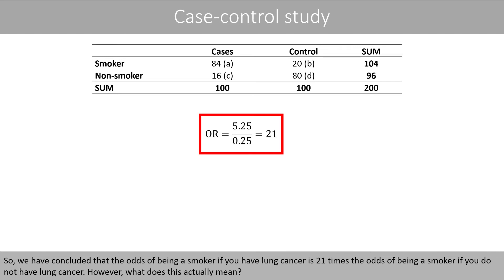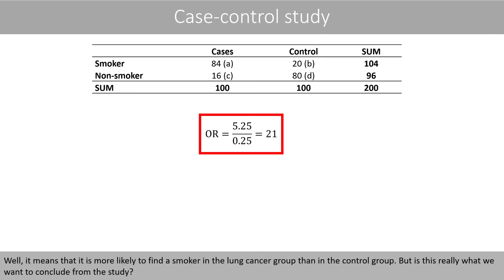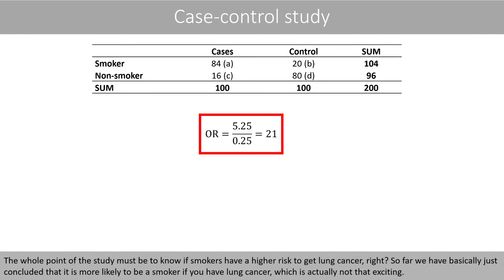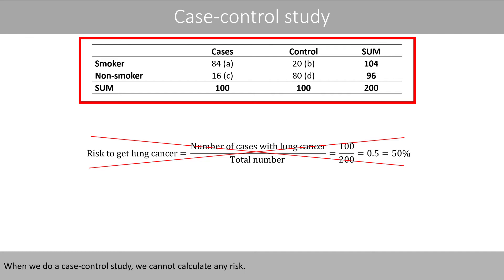However, what does this actually mean? Well, it means that it is more likely to find a smoker in the lung cancer group than in the control group. But is this really what we would like to conclude from the study? The whole point of the study must be to know if smokers have a higher risk to get lung cancer. So far, we have basically just concluded that it is more likely to be a smoker if you have lung cancer, which is actually not that exciting.